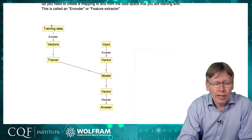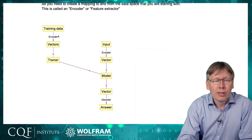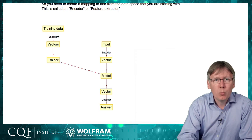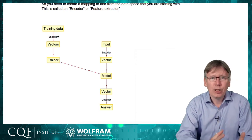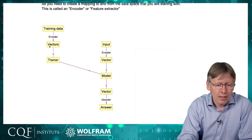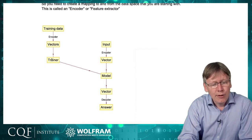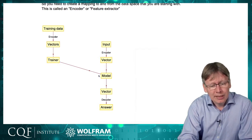What actually happens behind the scenes is illustrated by this diagram here. When we give it training data, it goes through a process called encoding. The encoder's job is to turn whatever our input is into a vector of numbers. Once you've got this vector of numbers, then we go through the training process that makes the model.